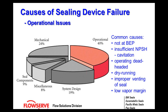One of them is insufficient net positive suction head, NPSH. This causes a phenomenon known as cavitation. Cavitation is in itself a topic for its own webinar, but know that if you don't have proper head into the pump, this will cause instability in the rotating assembly and cause a seal failure.